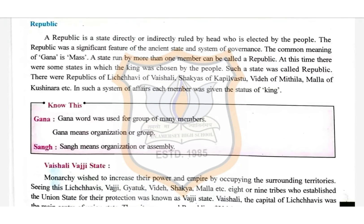Hello students, I hope you all are safe at home. Today I am going to explain the next topic of lesson number four, and the topic is Republic. A republic is a state directly or indirectly ruled by a head who is elected by the people. The republic was a significant feature of the ancient state and system of governance.